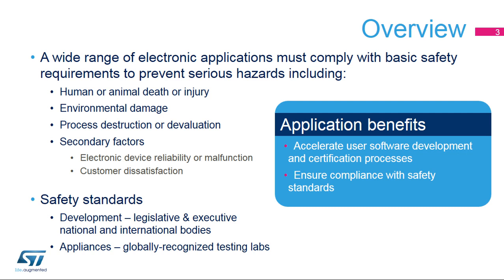The primary goal is to prevent human death or injury, as well as environmental damage. But there are many other important factors at a lower level, such as the devaluation of an industrial process, including the loss of important data, connections, power or control, and many others.